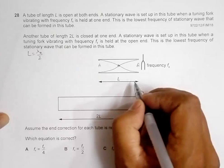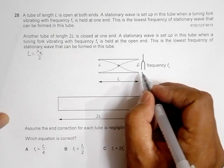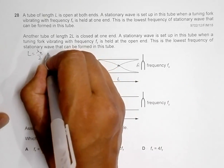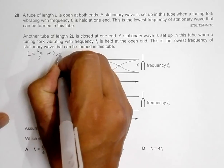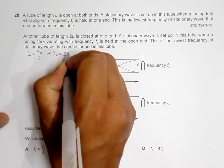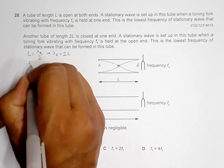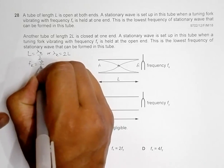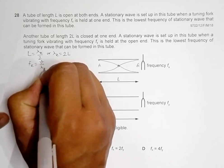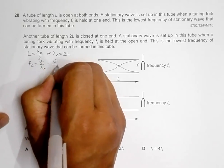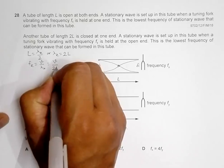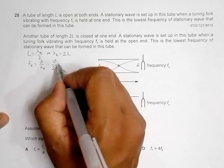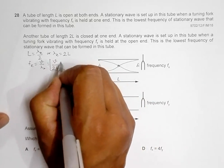Since it is in pipe x, this gives us λx is equal to twice L. And the frequency will be equal to velocity divided by λx, which equals velocity divided by twice L. So the value of the frequency fx here is V divided by 2L.